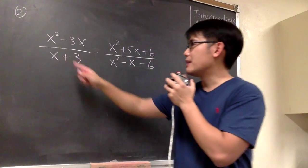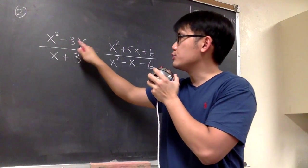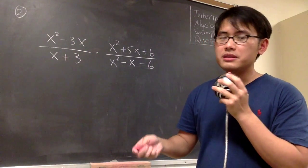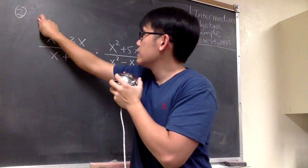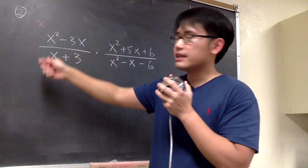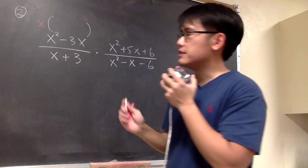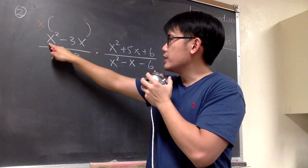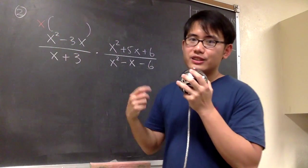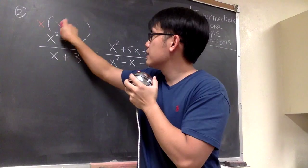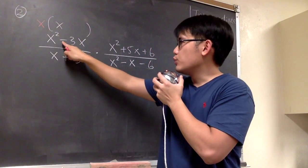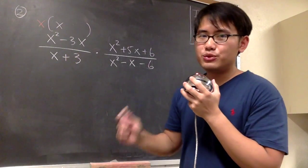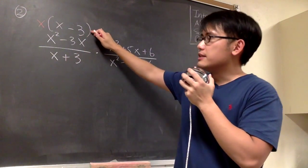Let's begin by factoring x² - 3x. We see that it has only two terms and both of them have an x in common, so we can factor out the common factor x. For the first term, originally we have x² but then we factor out an x so we have an x left, and for the second term, originally it was negative 3x but then we factor out an x so we have minus 3.